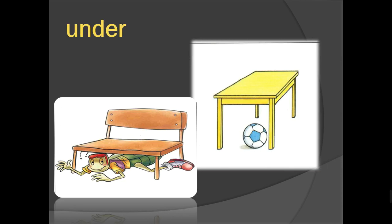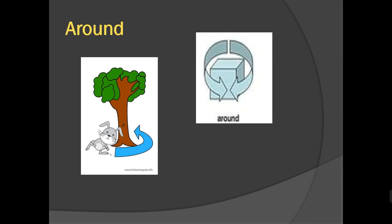Next, we have around. Can you see the arrow? It goes around the cube or around this block. Look at the rabbit to understand more. The rabbit goes in a circle around the tree.